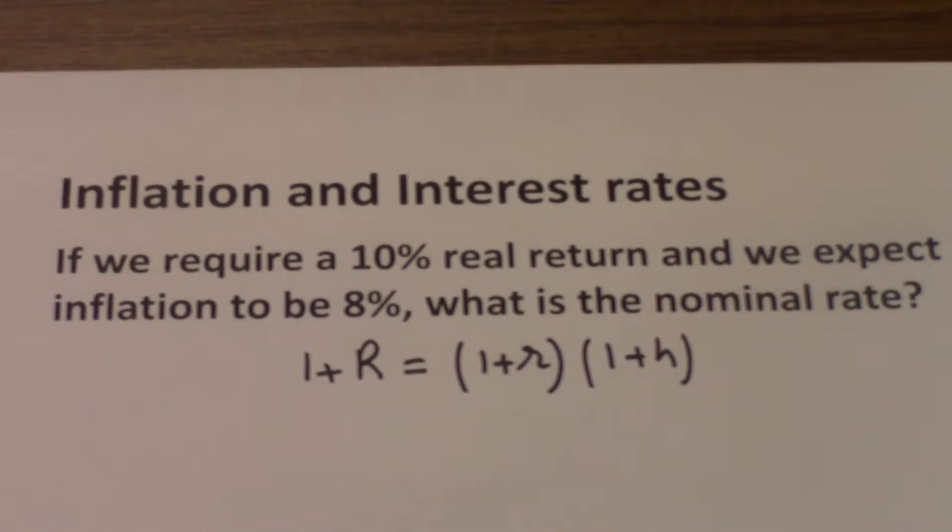Here you have to be clear about what each variable is. Big R is the nominal rate of return or the nominal interest rate, and this is what we are looking for in this question. Small r is the real interest or the real return, and h is the inflation.